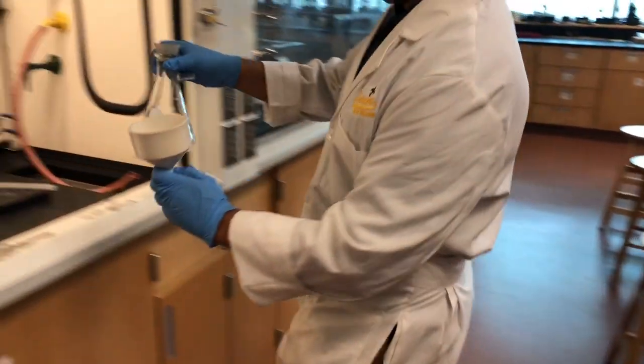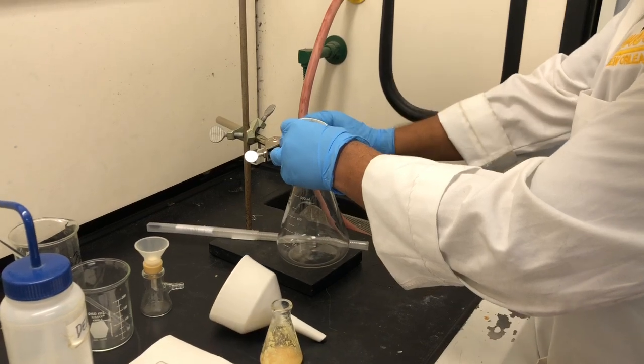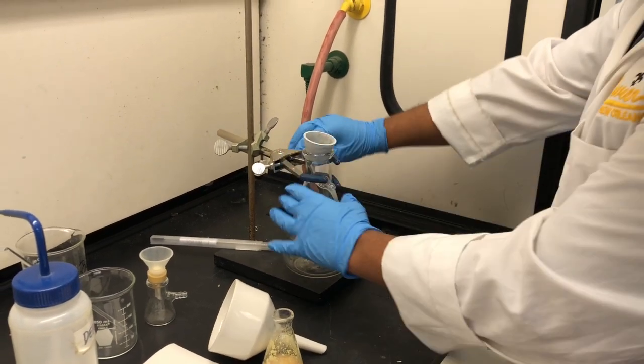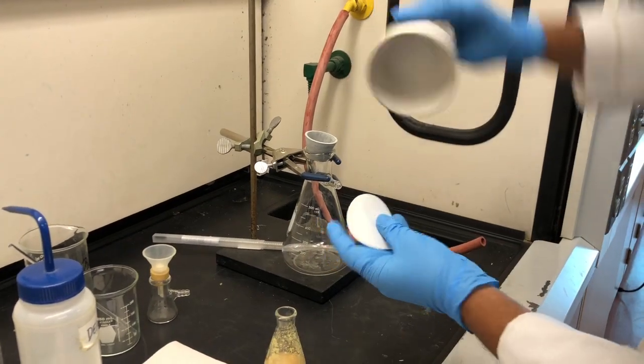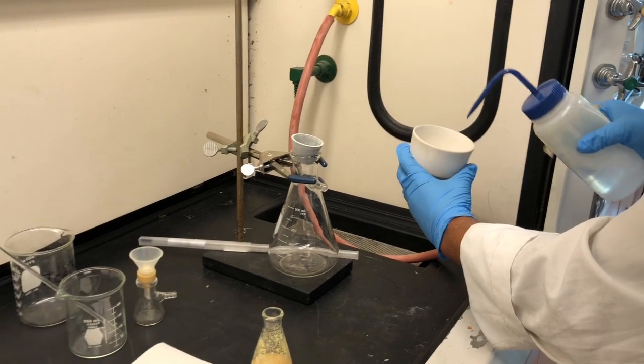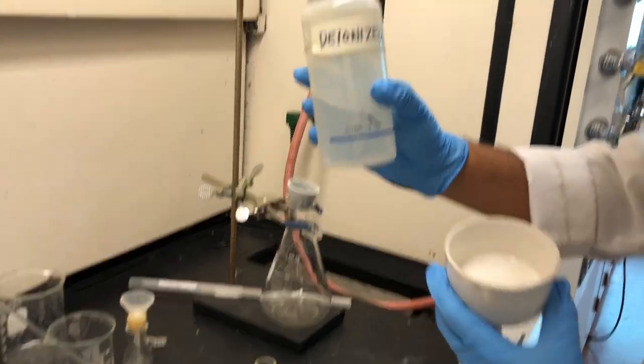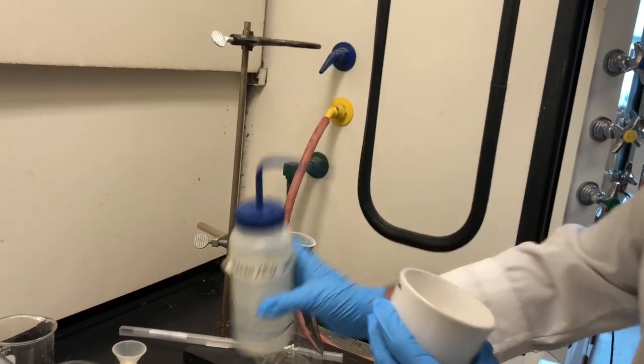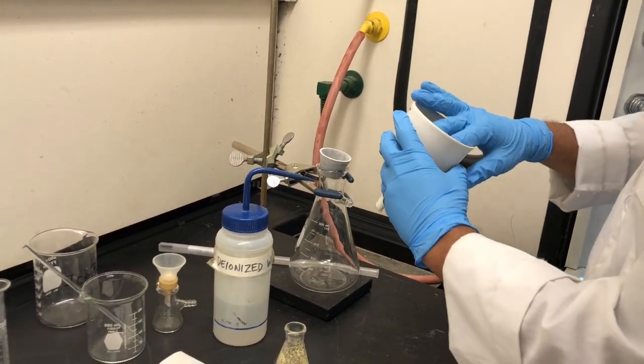Now it is expected from all of you that you understand and you have learned so far how to perform a filtration. However, I will still remind few basic concepts. First is you need to make sure you wet the filter paper. Otherwise, filter paper will not stick to the flask. You can use deionized water and you can see that the paper is not falling out.